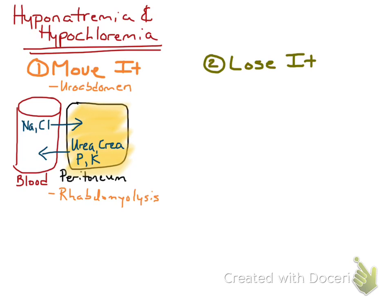So the expected serum or plasma changes with uroabdomen include decreases in sodium and chloride, and increases in urea, creatinine, phosphorus, and potassium.